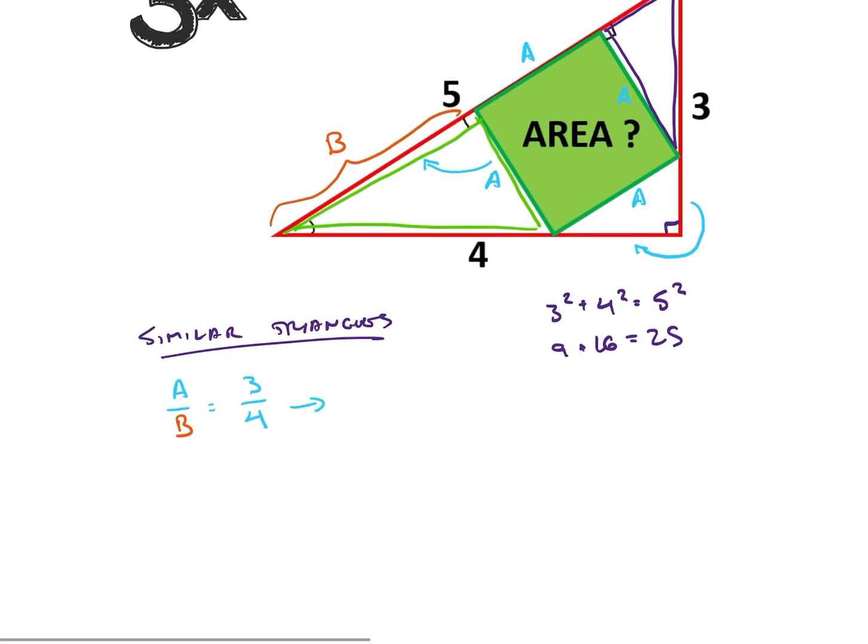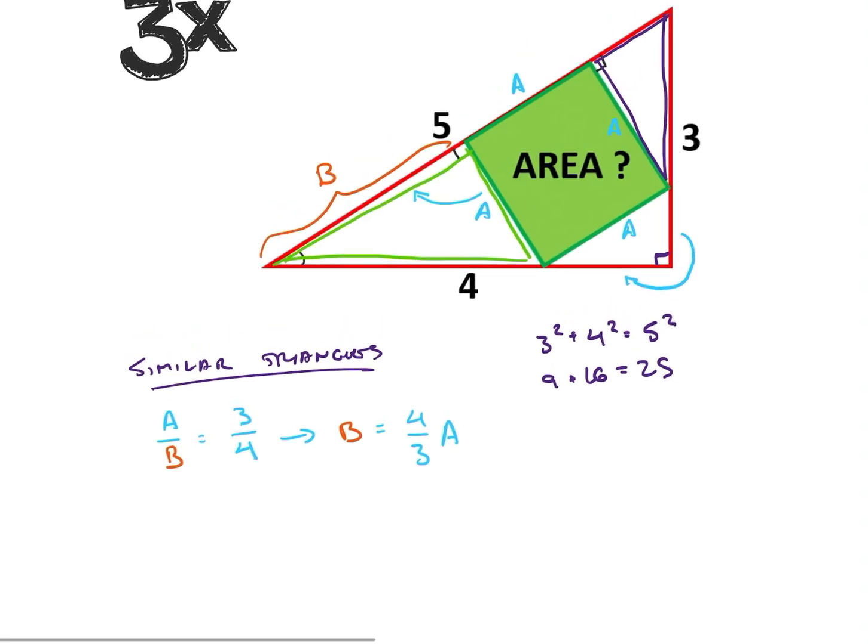That's clearly not five. So if we solve this for b, we're going to end up getting, multiplying four thirds, we're going to get four over three times a. So b is equal to four thirds a.